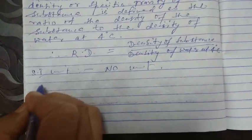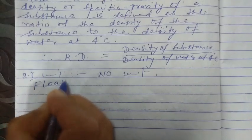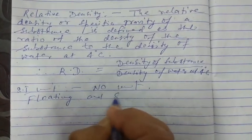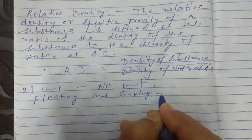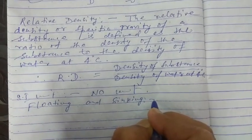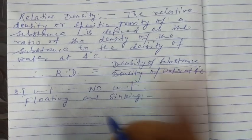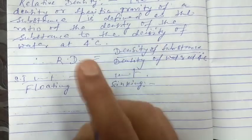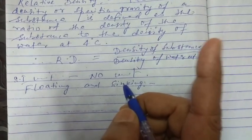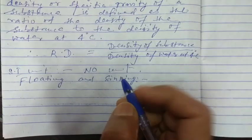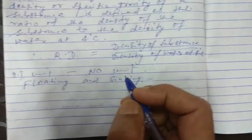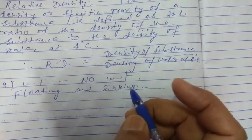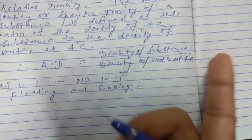Now, floating and sinking. An object sinks in a liquid of less density than its own; otherwise, it floats, partly or wholly submerged. For example, an iron nail sinks in water, but an iron ship floats because its average density is less than that of water.